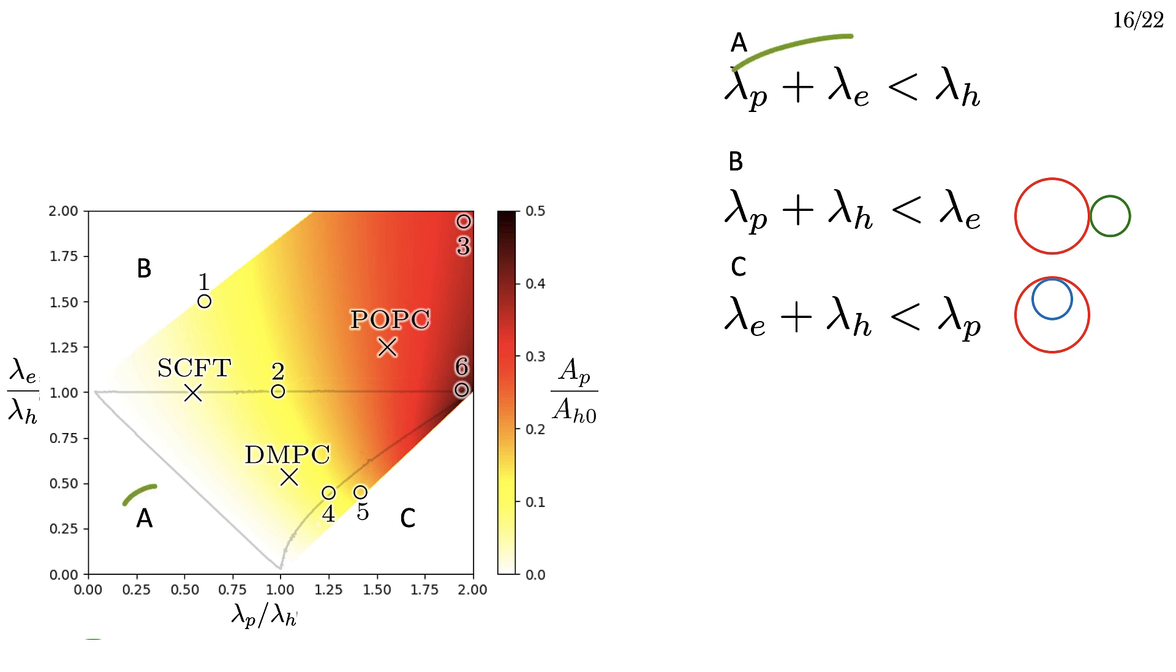Going region by region, at the bottom left labeled A, if lambda E plus lambda P is less than lambda H, pores always grow as we saw earlier. In region B, where lambda P plus lambda H is less than lambda E, the free energy can be reduced by eliminating the edge tension by pinching off the pore, creating a fusion pore that's disconnected from the hemifusion diaphragm.